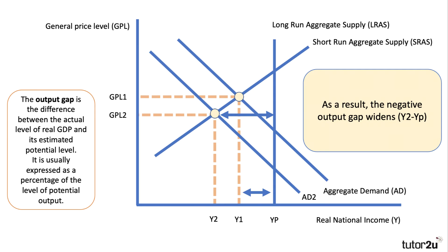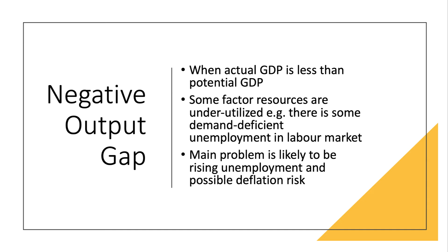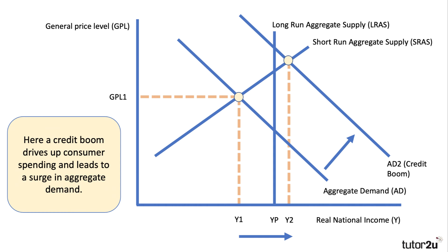A negative output gap means the economy is operating well below its potential. Factor resources — particularly labour, but also capital — are being underutilised; there is spare capacity. Typically when we have a large negative output gap, two economic problems we see are relatively low employment, perhaps rising unemployment, and the risk of deflation — if there's a lot of spare capacity and excess supply, there could be a threat of persistent price deflation.